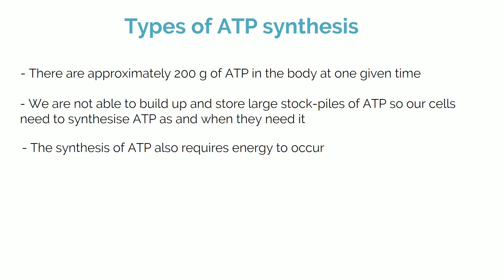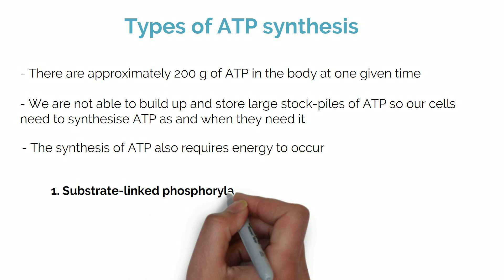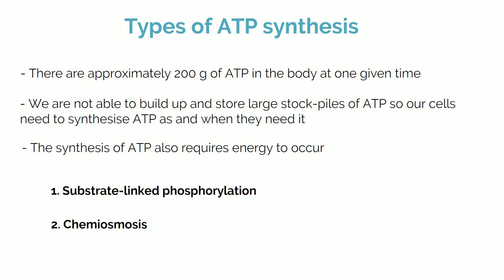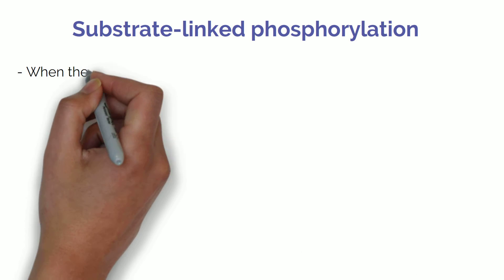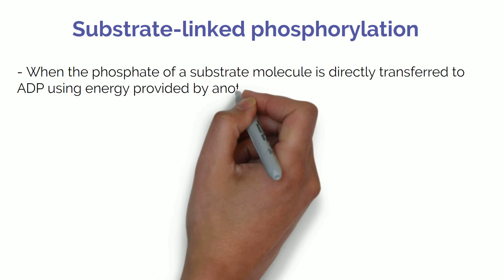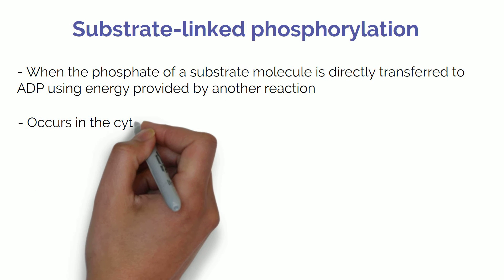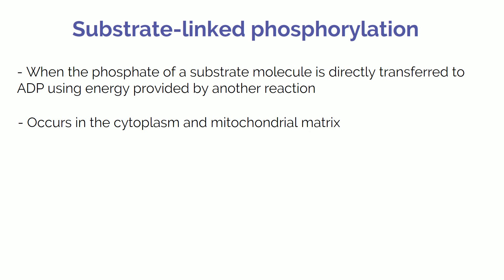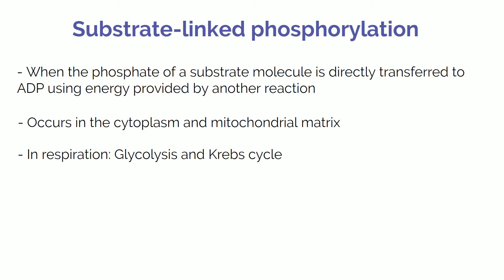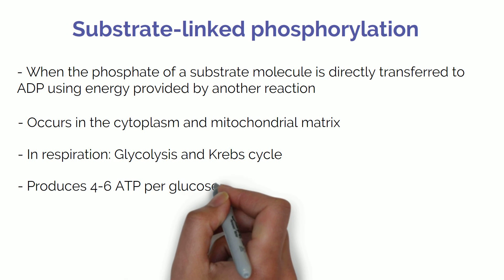There are two methods of ATP synthesis found in respiration and photosynthesis. Substrate-linked phosphorylation is when the phosphate of a substrate molecule is directly transferred to ADP using energy provided by another reaction. This can occur in the cytoplasm and the mitochondrial matrix. During respiration, this occurs during glycolysis and the Krebs cycle, producing four to six ATP per glucose molecule.